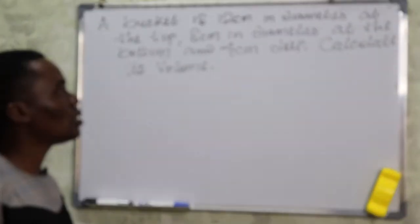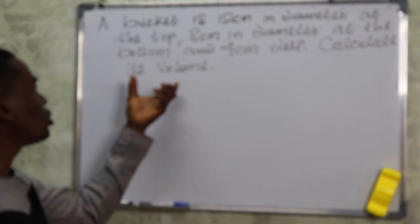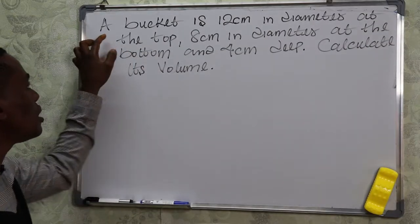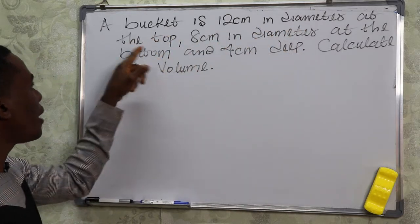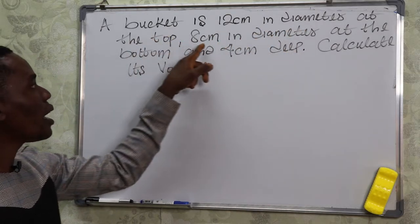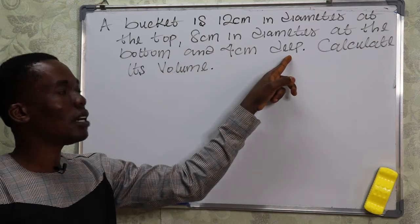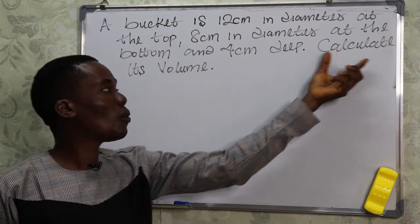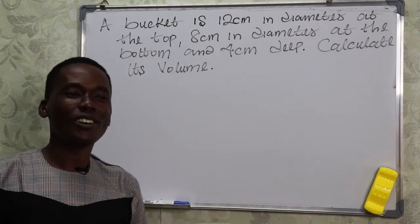Today we're going to look at a question that has to do with shapes and angles — specifically the shapes of a solid. The question says: a bucket is 12 centimeters in diameter at the top, 8 centimeters in diameter at the bottom, and 4 centimeters deep. You're asked to calculate its volume.